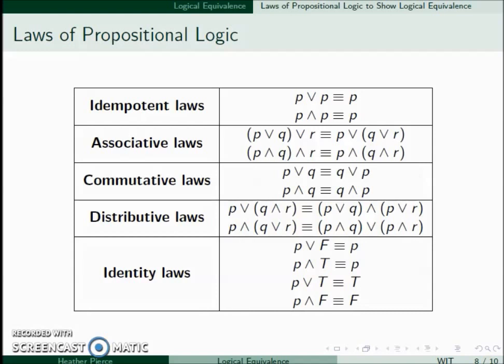We also have the identity laws. If we have P ∨ a false statement, this is equivalent to P. P ∧ a true statement is equivalent to P. P ∨ a true statement is always true, and P ∧ a false statement is always false.